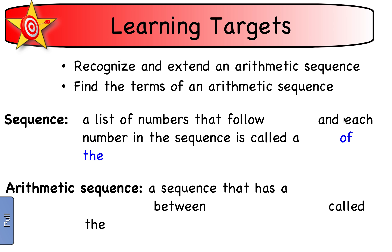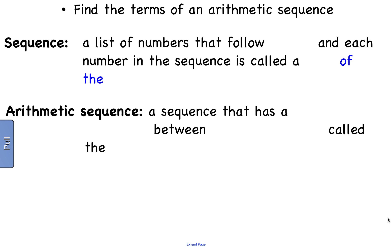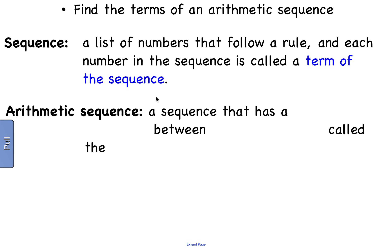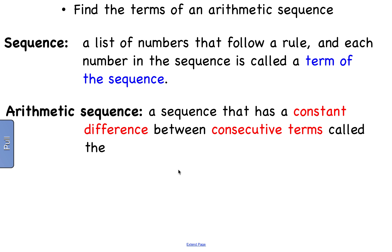To get started, we need to define some new terms. First of all, what is a sequence? A sequence is just a list of numbers that follow some kind of rule, and every number in the sequence is called a term of the sequence. An arithmetic sequence is a particular specific type of sequence that has a constant difference between consecutive terms, and that constant difference is called the common difference.